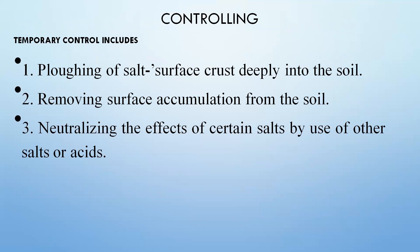Temporary control measures to make soil cultivable include: deeply ploughing the soil surface crust into the soil, digging out the fertile topsoil, removing unproductive or acidic surface soil, and neutralizing the effect of certain salts in the soil using other salts through chemical reactions to decrease the salty nature of the soil and make it cultivable.